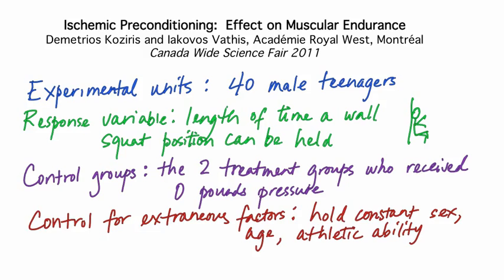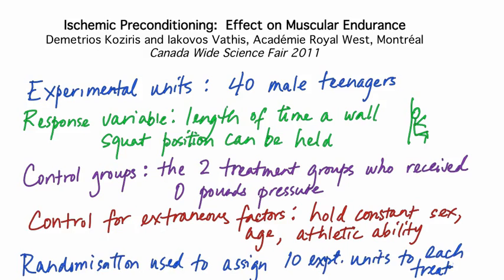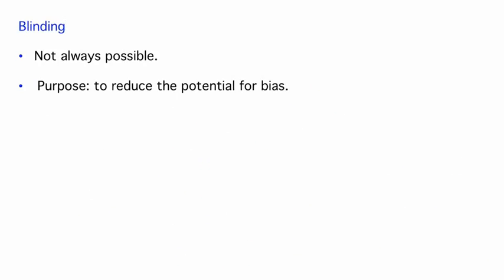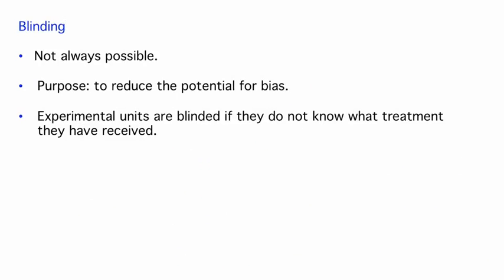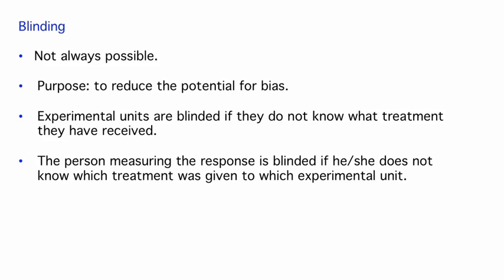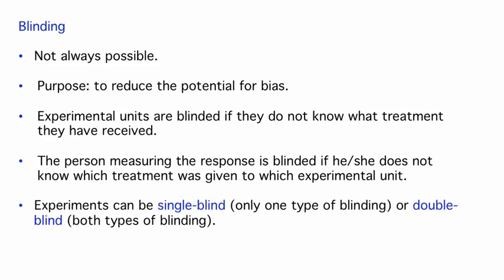Another principle of experimental design is randomization, and the 40 experimental units were randomly assigned to which of the four treatments they received. This ischemic preconditioning experiment also illustrates other characteristics of excellent design: the students used blinding. Blinding, if it can be used, reduces the potential for bias since people don't know if a treatment is in place or not. Subjects can be blinded, meaning they don't know which treatment they received, and the person measuring the response can also be blinded. Experiments can be single blind or double blinded if both types of blinding were used.